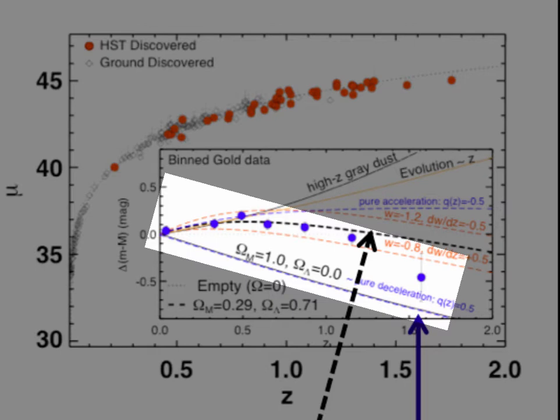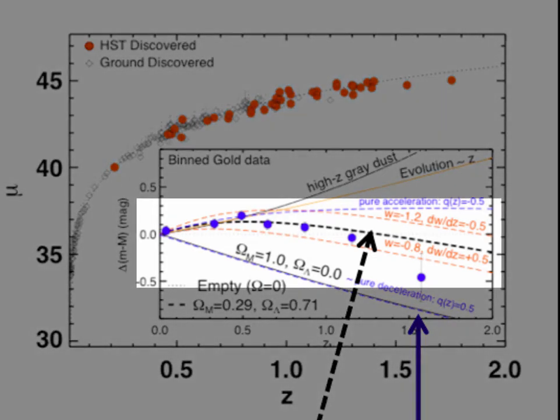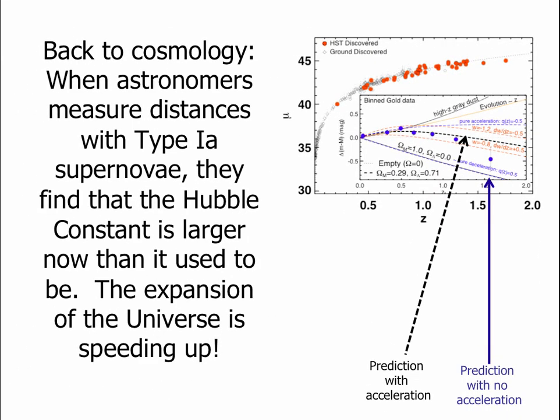The blue points in the inset of the graph show, averaging over the supernovae, what the universe was actually doing. And you see, it doesn't agree with that prediction. What it does agree with is the dotted black line, which is a prediction allowing for the universe to accelerate. So it appears that the universe is expanding faster now than it was in the past. Don't worry about the other lines. It's lots of other options. None of them work except for this idea that the universe is accelerating. When this was discovered, it was shocking, because no one expected it. And so the discoverers of this won the Nobel Prize in 2011.